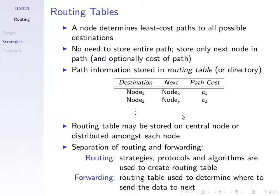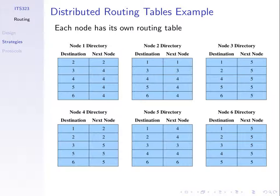The least cost paths are stored in routing tables. In our example, this was a case with distributed routing tables — six routing tables for each node. The way we read the routing tables is that if node four has a packet to send to destination three, then the next node to send to is five. This is relevant for both fixed and adaptive routing.